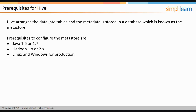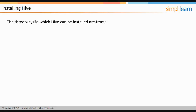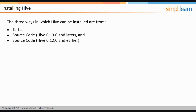Hive can be installed in three ways: from the Tarball, which is the most commonly used method; from source code for Hive 0.13.0 and later; and from source code for Hive 0.12.0 and earlier. Let us look at the steps to install Hive from Tarball in the next screen.